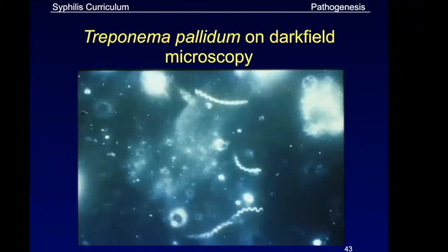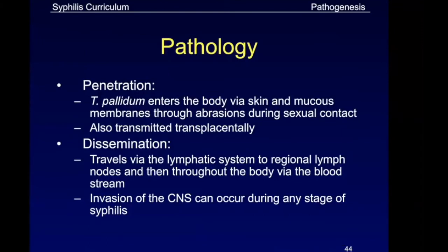Treponema pallidum enters the body via the skin and mucous membranes through abrasions during sexual contact, and can also be transmitted transplacentally. It travels to the lymphatic system, regional lymph nodes, and then throughout the body via the blood. It can disseminate to other parts of the body including the CNS, which is why neurosyphilis occurs.